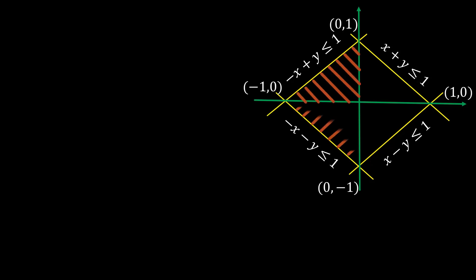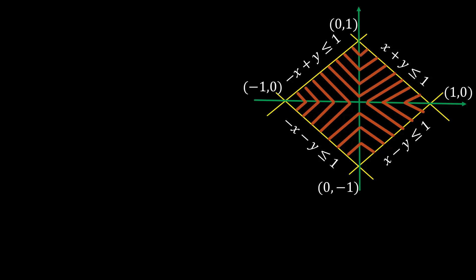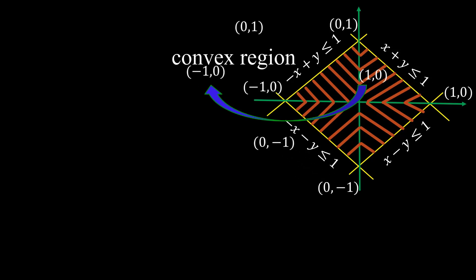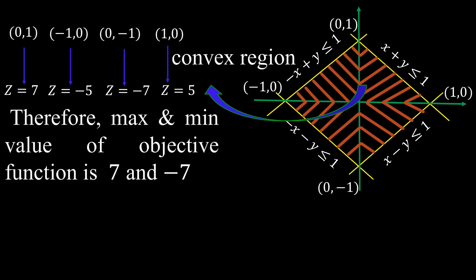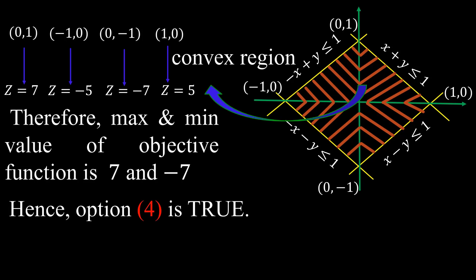Since the origin satisfies all the constraints, the shaded region is towards the origin, and this region is known as the convex region. The optimal value is obtained at the corner points: (0, 1), (−1, 0), (0, −1), and (1, 0). At (0, 1) the objective function value is 7; at (−1, 0) it is −5; at (0, −1) it is −7; at (1, 0) it is 5. Therefore, the maximum and minimum values are 7 and −7, hence option 4 is correct.